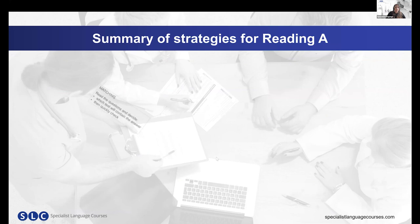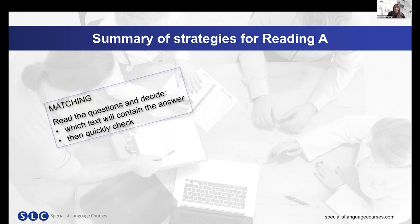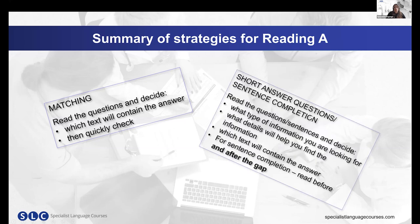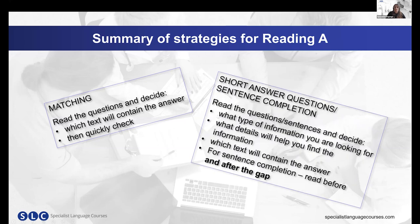A summary of the strategies: for matching, read the questions, decide which text contains the answers, then quickly check if necessary. For short answer questions, decide what type of information you're looking for, identify what details will help you find it, and determine which text contains the answers. For sentence completion, once you've found the answer, read before and after the gap to make sure it makes sense. For short answer questions, make sure you're not repeating any words already used in the question.